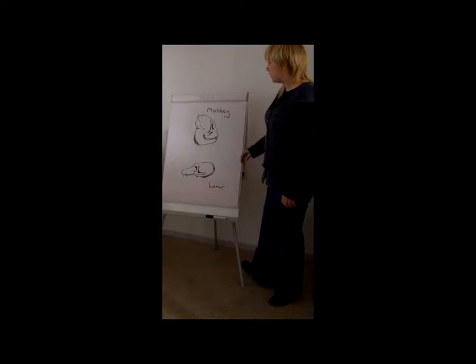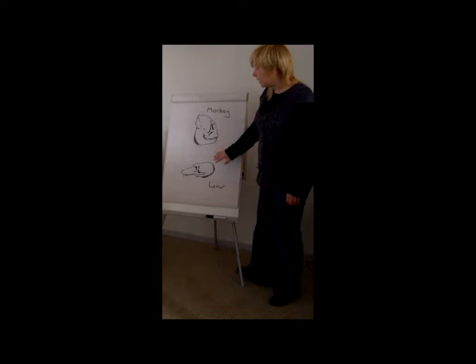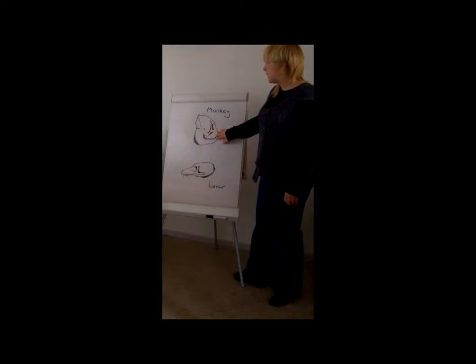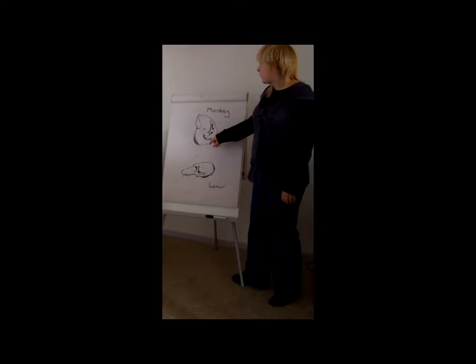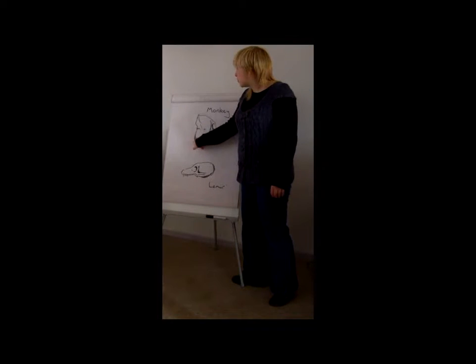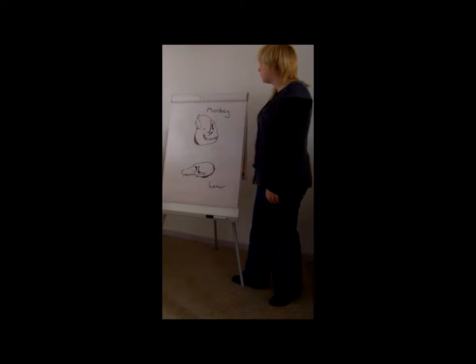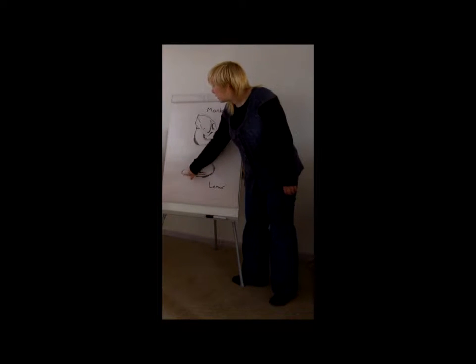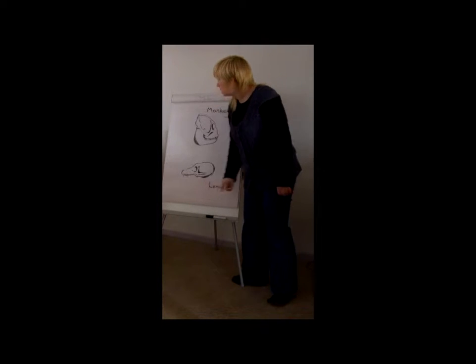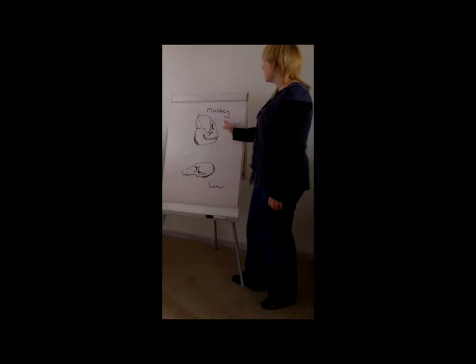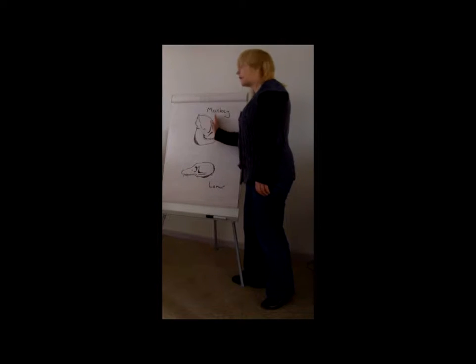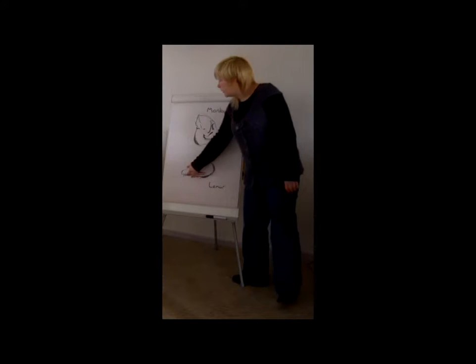If we look now at an example of a monkey and a lemur, this is actually a howler monkey. We can tell this because it has this really deep, deep-set jaw. We can also tell it's a monkey because it doesn't have this elongated snout that a prosimian would have. The face is very flat because smell isn't important to them, unlike lemur.